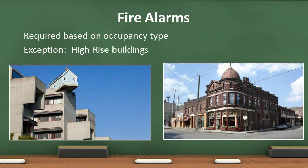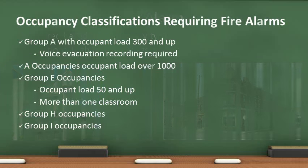The requirement for fire alarm systems is driven by occupancy type. Certain occupancies are required by code to have a fire alarm system. This explains why in multi-story buildings, a fire alarm system may be installed on one or two floors but not the entire building. The exception to this regulation are high-rise buildings, which must be entirely protected. The building code dictates which occupancies are required to have alarm systems. Occupancy classification dictates the fire alarm requirement.